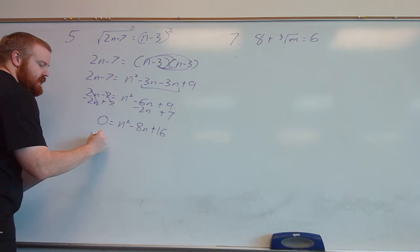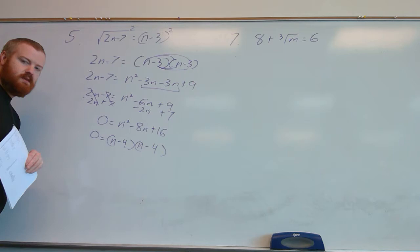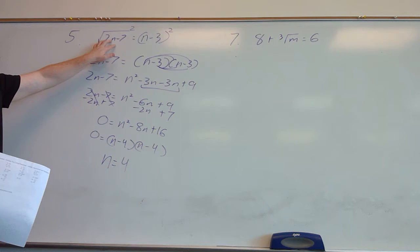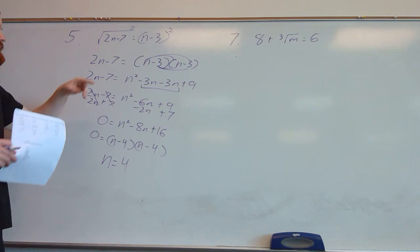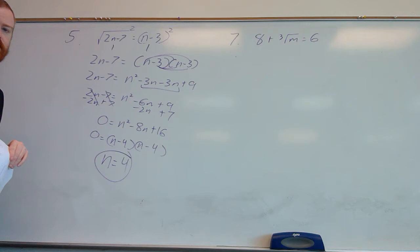Now we factor. We need two numbers that multiply to 16 and add to negative 8 — that's negative 4 and negative 4. So our solution is n equals positive 4. Plugging back in: 2 times 4 is 8, minus 7 gives 1. On the right side, 4 minus 3 also gives 1 — same on both sides, so the solution is good.